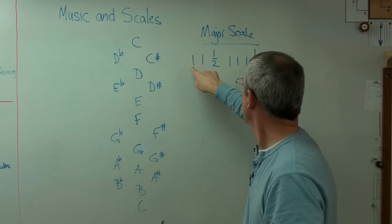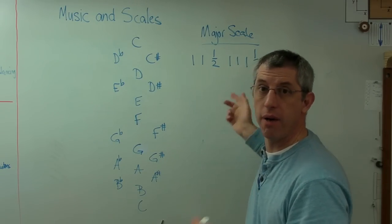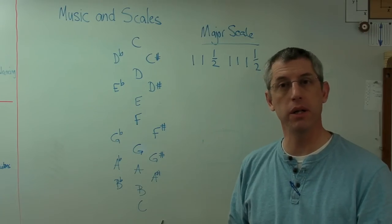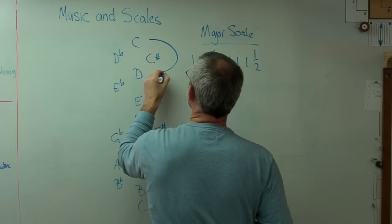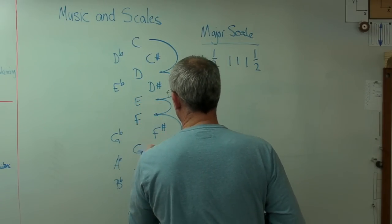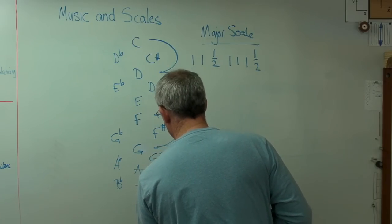So I start what's called the root note, and any of these notes could be a root note. But I'm going to start with C and go one step, one half step, one, one, one, one, half. And then the notes that I land on, those are going to be the notes that I use to make the scale. So let's start with C, go one, one, one, half, one, one, one, one, half.